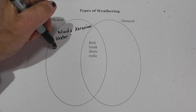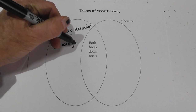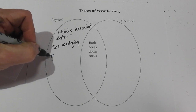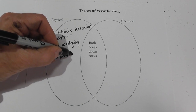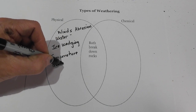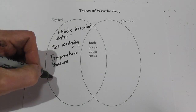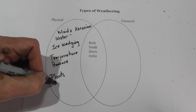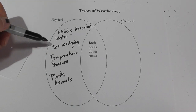You have ice wedging, which happens when ice freezes, expands, and breaks the rock. You have changes in temperature and pressure — both of these expand and contract the rock and can weaken and fracture it, and can exfoliate it. And then you have plants, whose roots grow, and even animals can break down rocks. All these are physical changes.